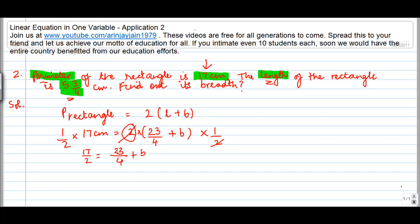Again, to simplify things, what do I do? I subtract 23 by 4 from both the sides minus 23 by 4. So, this gets knocked off here. What I am left on the right hand side is B is equal to 17 divided by 2 minus 23 divided by 4.